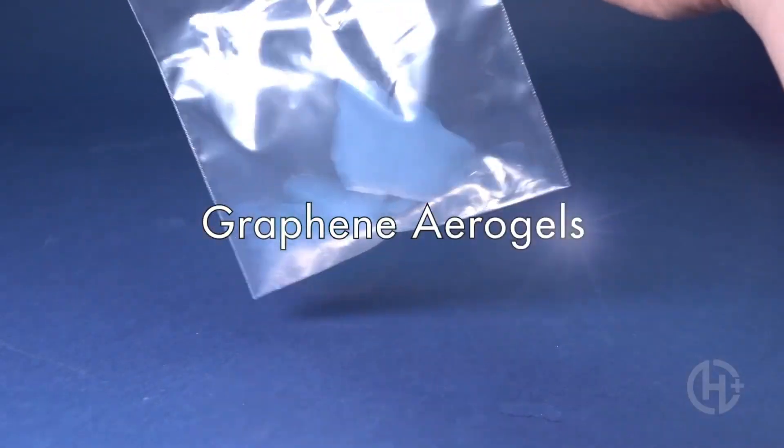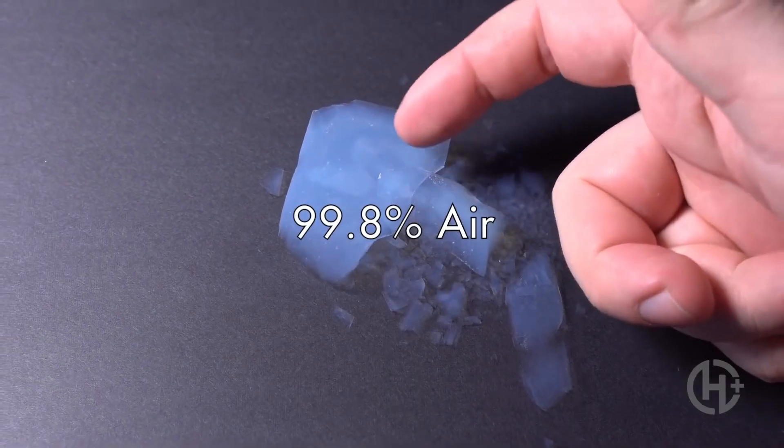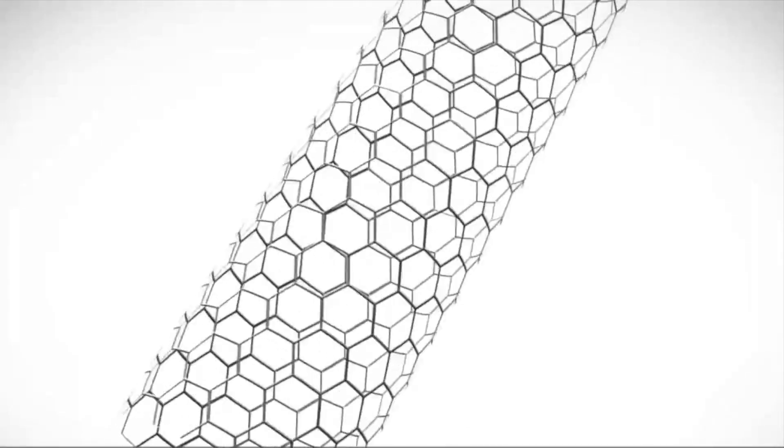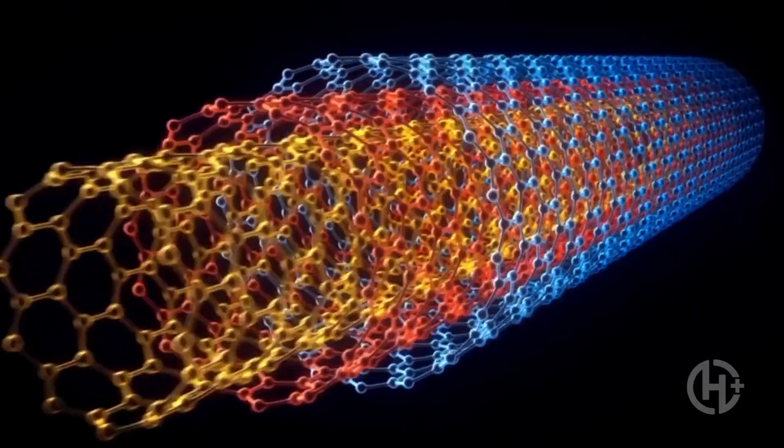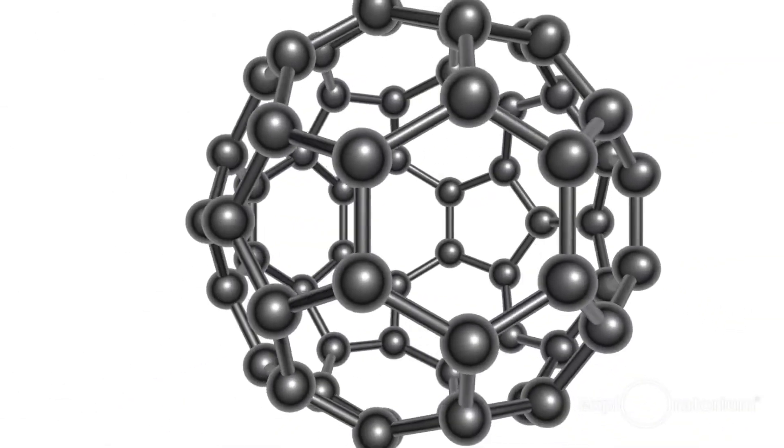Today, we can even create graphene aerogels that are just 99.8% air, yet stronger than steel, as well as carbon nanotubes, where graphene is rolled up into layered cylinders, or fullerenes, which can be mixed in to strengthen other materials.